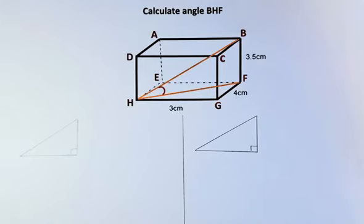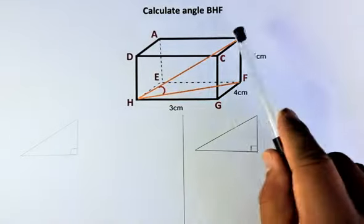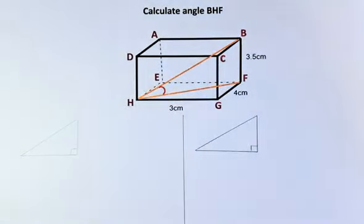So without further ado, let's solve this. We have a cuboid in front of us. They are labeled as A, B, C, D at the top and E, F, G, H at the bottom.